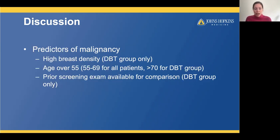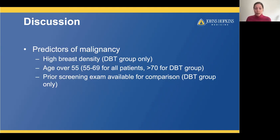Regarding predictors of malignancy, in the DBT group, high breast density and older age were predictors of malignancy — in the DBT group this included all patients over 55. In the FFDM group, only the 55 to 69 age group was significant, not the greater than 70 group. Whether or not there was a prior screening exam was also significant in the DBT group, but only on univariate analysis.